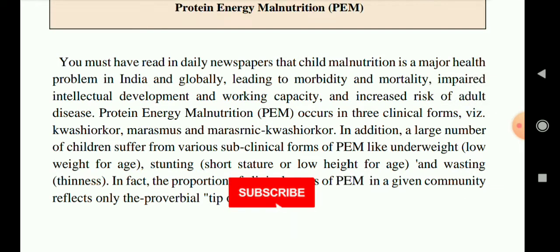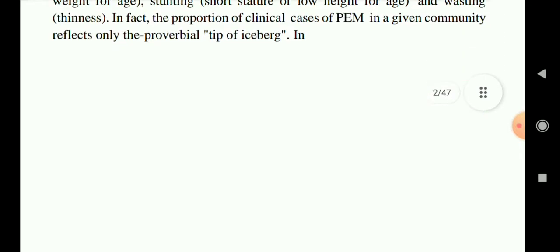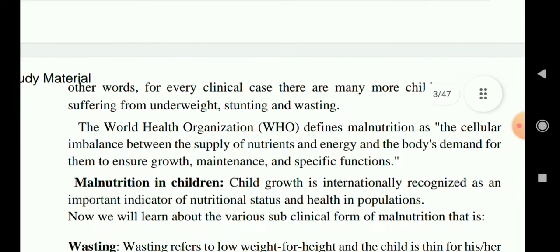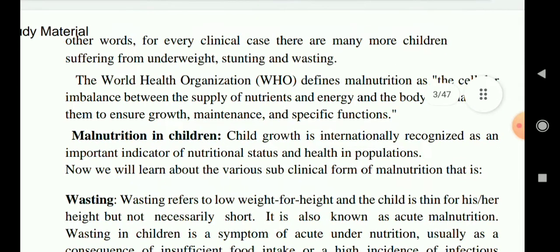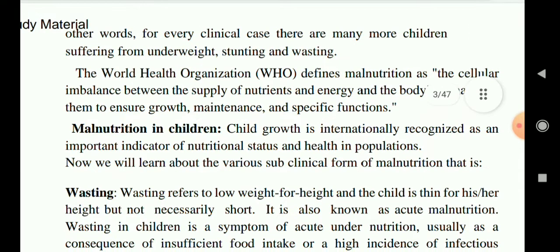This highlights how major health problems in India are increasing day by day, leading to morbidity — frequent illness — and mortality. Kwashiorkor is caused due to deficiency of energy, and marasmus is caused due to deficiency of protein. The World Health Organization defines malnutrition as a cellular imbalance between the supply of nutrients and energy and the body's demands for growth, maintenance, and specific functions.